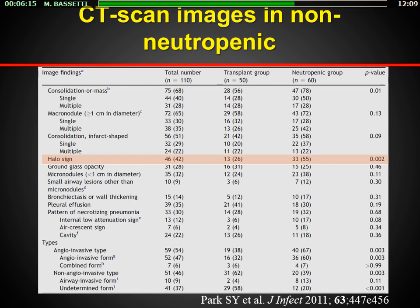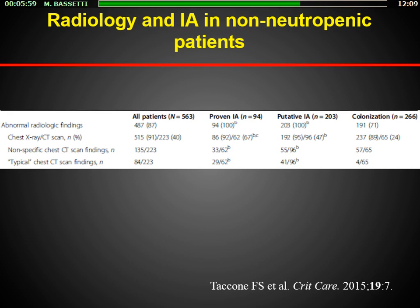The halo sign is very frequent in neutropenic patients but not so frequent in transplant and non-neutropenic patients. A second study published last year by Fabio Taccone again showed that there are no specific chest CT patterns in patients with invasive aspergillosis in the ICU. It is important to perform radiological imaging, but do not expect to see the typical images found in hematological patients.